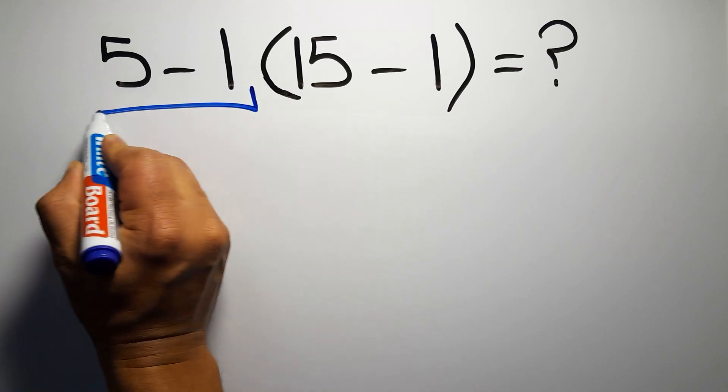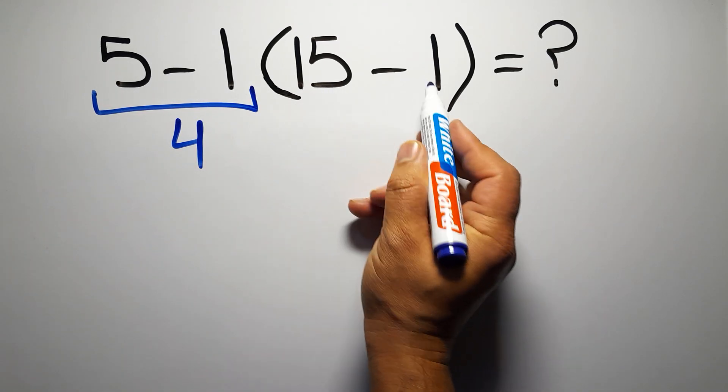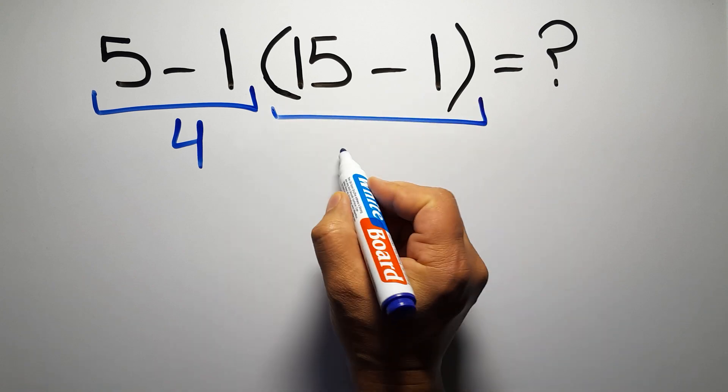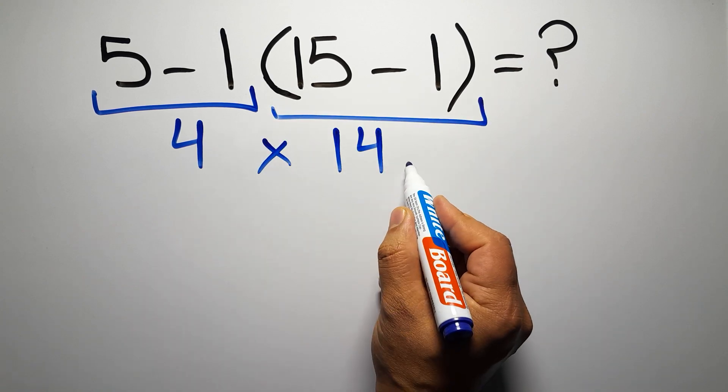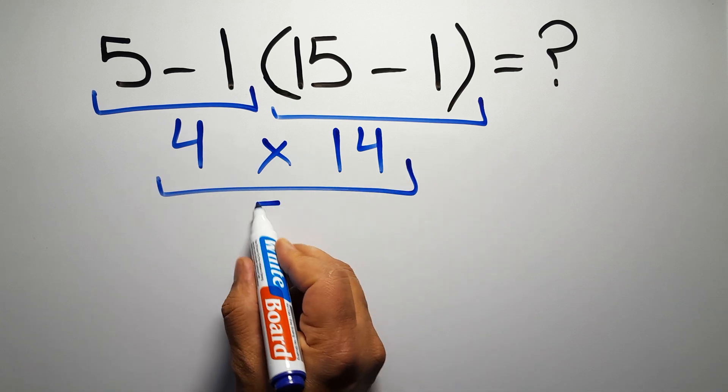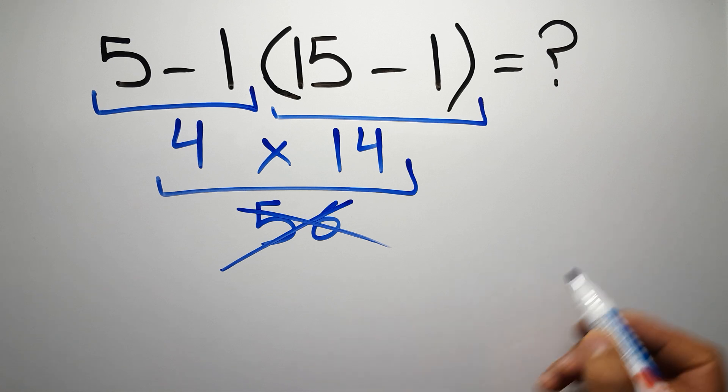5 minus 1 gives us 4, and inside these parentheses we have 15 minus 1, which equals 14, so 4 times 14 equals 56. But this answer is not correct because according to the order of operations, first we have to do parentheses.